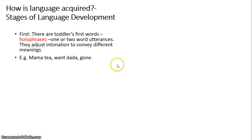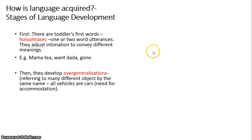Additionally, we look at how language develops in stages. First, we have holophrases used by toddlers — one-word or two-word utterances — where they adjust their intonation to indicate whether it's a question, a statement, or a demand. They may say 'tea,' meaning they want more tea, or 'mama, mama,' meaning they want their mother, or point and say 'gone,' 'mama gone,' or 'daddy gone.' This is a means of expressing an entire sentence using just a short one- or two-word utterance.